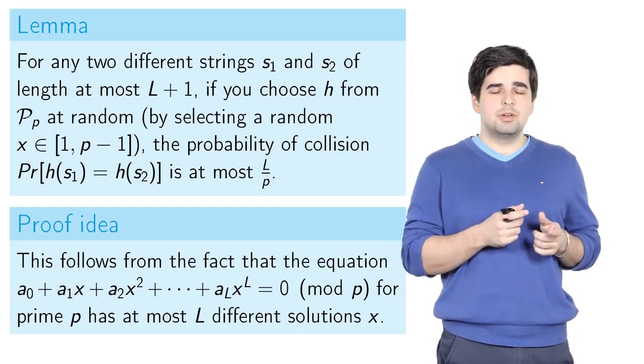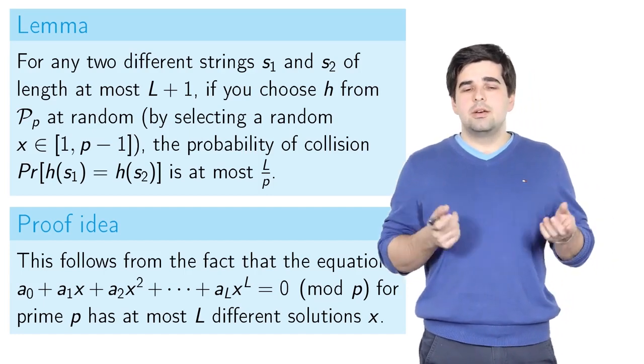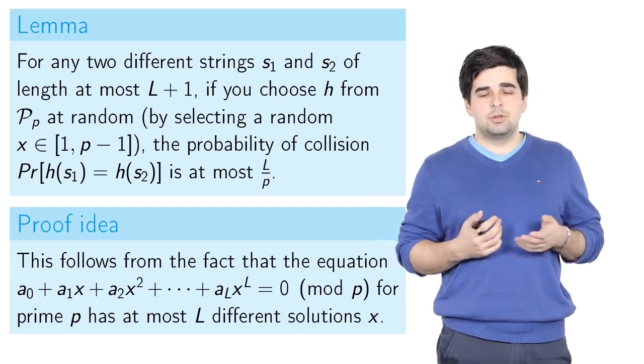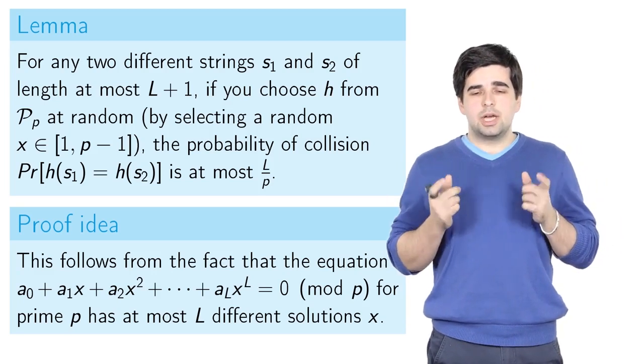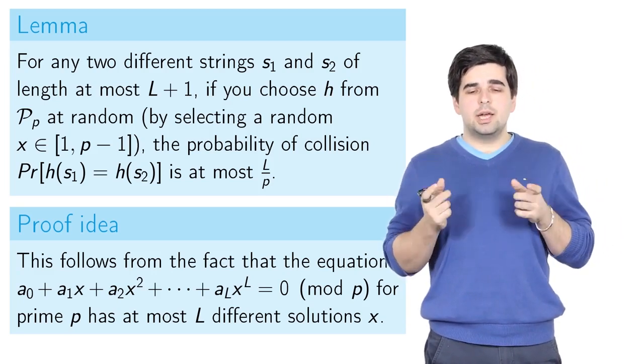The fact that strings are different makes sure that at least one of the coefficients of this equation is different from zero, and that is essential. If the strings were the same, of course the value of any hash function on them will be the same. But if they are different, then the probability is at most L/p because there are only L or fewer different x values for which the hash function can give the same value on these two strings.